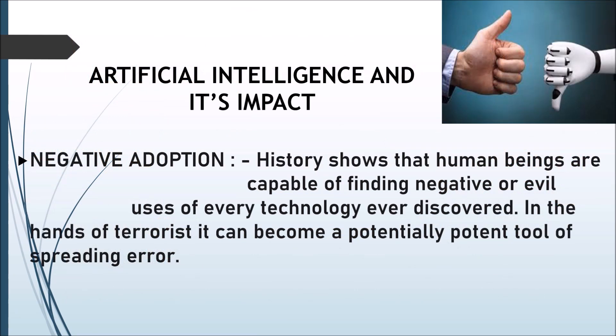Regarding the impact of artificial intelligence, as Stephen Hawking said: 'I believe there is no deep difference between what can be achieved by a biological brain and what can be achieved by a computer. It therefore follows that computers can in theory emulate human intelligence and exceed it.' But he also said the rise of powerful AI will be either the best or the worst thing ever to happen to humanity. History shows that human beings are capable of finding negative or evil uses of every technology ever discovered — in the hands of terrorists, it can become a potentially potent tool of spreading terror.